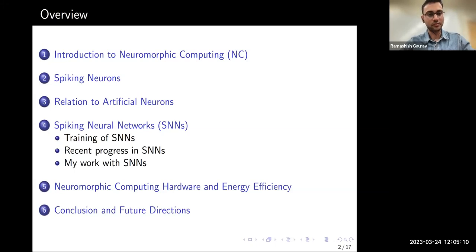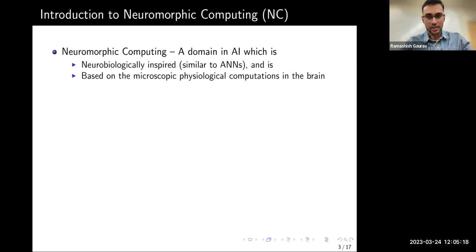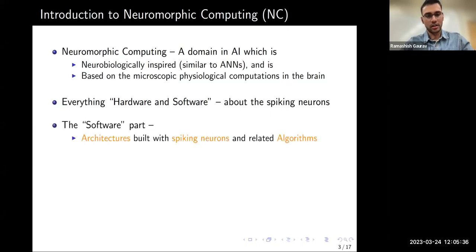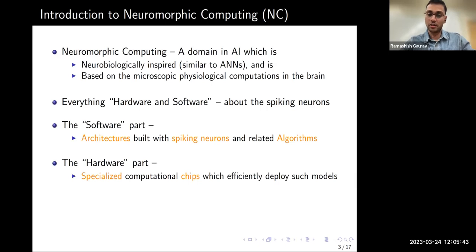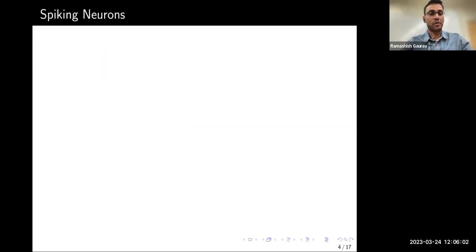Neuromorphic computing is a domain in AI that is neurobiologically inspired, similar to ANNs but with important differences. It is based on microscopic physiological computations in the brain. In short, it covers everything — hardware and software — about spiking neurons. The software part consists of architectures with spiking neurons and related algorithms, while the hardware part consists of specialized computational chips that efficiently deploy such models in an energy-efficient manner. My research focuses on the software aspects, especially training of spiking neural networks.